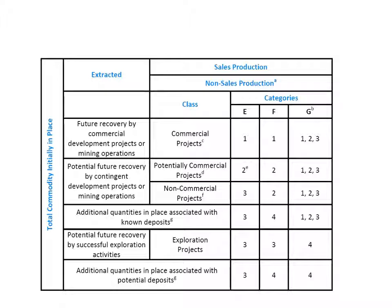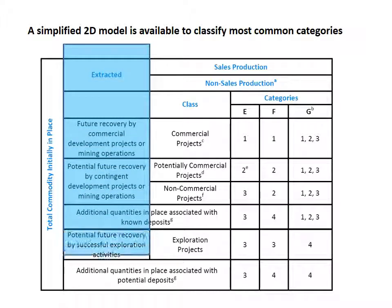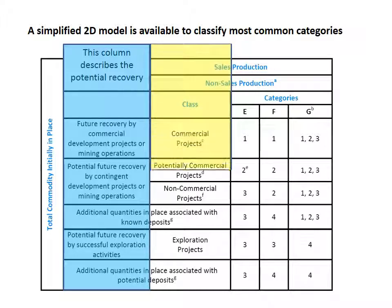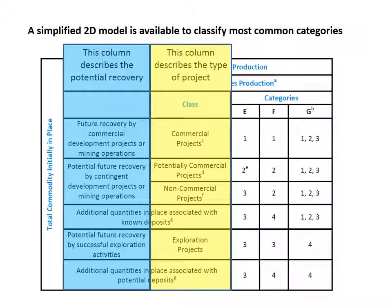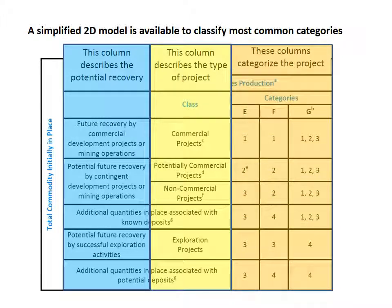This slide shows a simplified 2D model derived from the 3D model, which allows classification of most common projects. The first column describes the potential recovery from the in-place resources. The second column classifies the type of project from exploration to commercial projects. In the three columns on the right, the projects are classified in categories E, F and G, similar to the description given on the previous slides.